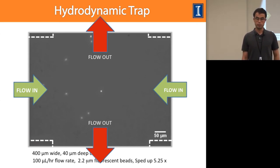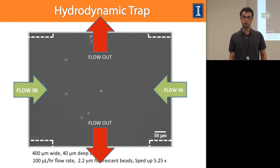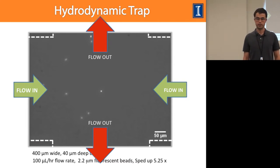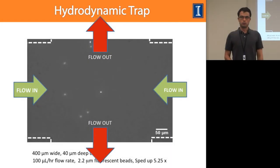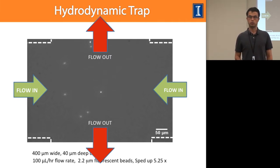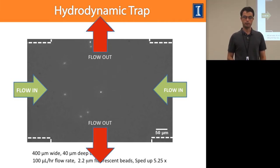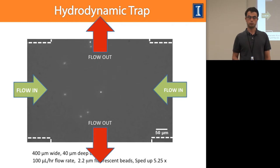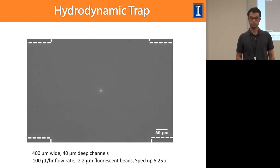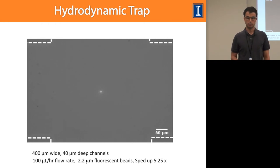This movie shows trapping and isolation of a single particle from a sample solution, showing the flow-in and flow-out directions. We demonstrate on-demand trapping of several particles back to back. Here's the first one, the second one, and the third one. This allows trapping individual target particles in a sample solution and isolating them from the rest of the sample. Eventually we let this particle go as well.